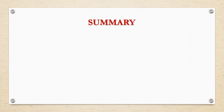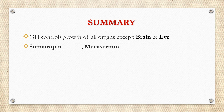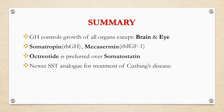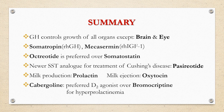Summary of key points: Growth hormone controls growth of all organs except brain and eye. Somatropin is a recombinant human growth hormone, and mecasermin is a recombinant human IGF-1. For therapeutic purposes, the synthetic analog octreotide is preferred over somatostatin. The newer somatostatin analog approved for the treatment of Cushing's disease is pasireotide. For milk production, prolactin; for milk ejection, oxytocin. Cabergoline is the longer-acting and preferred dopamine D2 receptor agonist over bromocriptine for hyperprolactinemia and acromegaly.